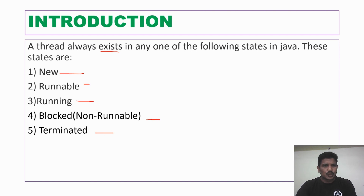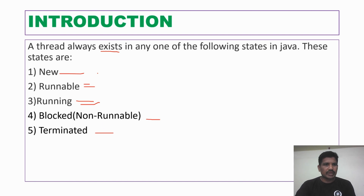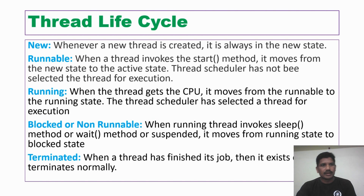I will explain when a thread will be in the new state, when it will be in the runnable state, when it will be in the running state, when it goes from running state to the blocked state, and when it will be in the terminated state — one by one with the help of an example.